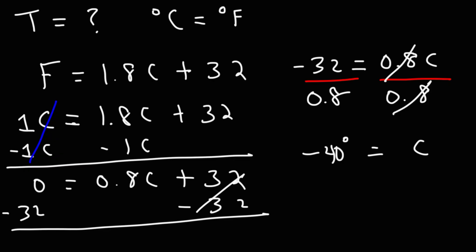So negative 40 degrees is the temperature at which the Celsius temperature is the same as the Fahrenheit temperature. If someone says it's negative 40 degrees outside and you ask them, is that Celsius or Fahrenheit? The answer is both — it's negative 40 degrees Celsius and negative 40 degrees Fahrenheit. That's the point where these two temperature scales have the same value.